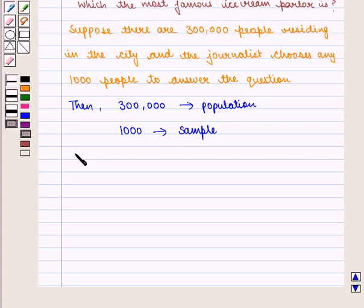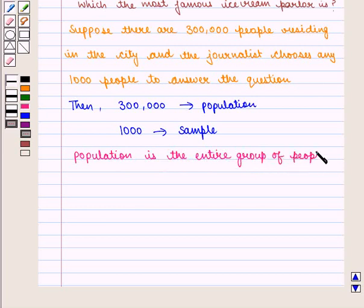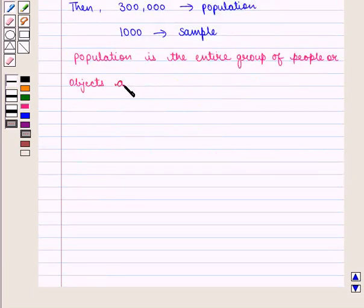Thus, we can say, population is the entire group of people or objects. And sample is a part of the population.